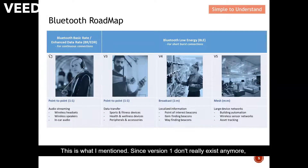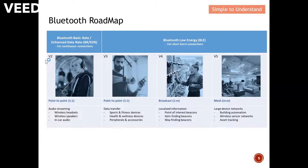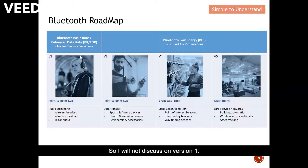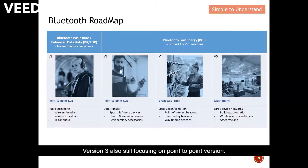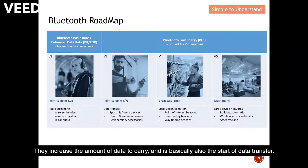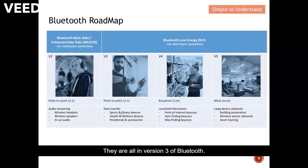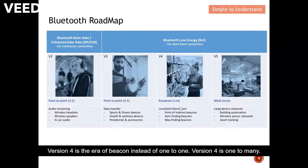Since version 1 is no longer in use, I won't discuss it. Version 2 is the start of the era of wireless headsets, wireless speakers, and in-car audio — mainly point-to-point communication. Version 3 also focused on point-to-point but increased the amount of data carried, marking the start of data transfer for sport, fitness, and wearable health monitoring devices. Version 4 is the era of beacons.